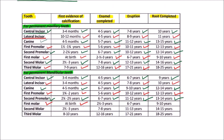For the mandibular first molar, the first evidence of calcification is at birth, enamel is completed by 2⅕ to 3 years, eruption occurs by 6 to 7 years, and the root is completed by 9 to 10 years.